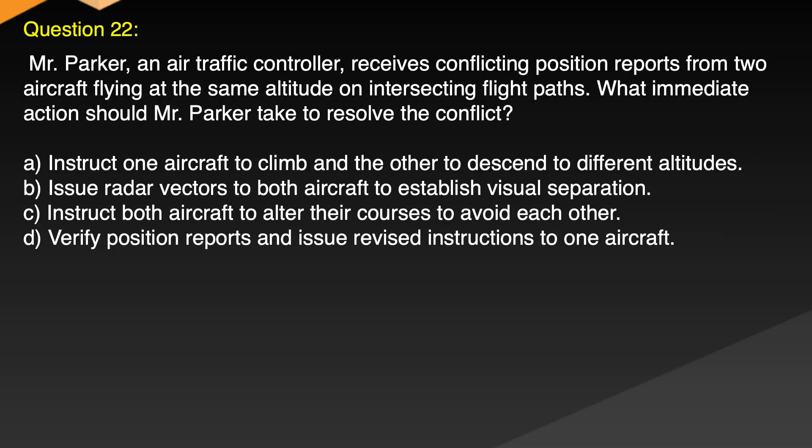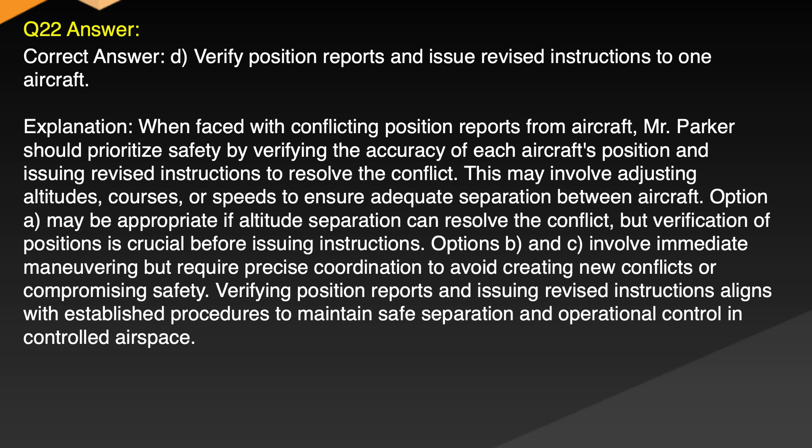Question 22. Mr. Parker, an air traffic controller, receives conflicting position reports from two aircraft flying at the same altitude on intersecting flight paths. What immediate action should Mr. Parker take to resolve the conflict? A. Instruct one aircraft to climb and the other to descend to different altitudes. B. Issue radar vectors to both aircraft to establish visual separation. C. Instruct both aircraft to alter their courses to avoid each other. D. Verify position reports and issue revised instructions to one aircraft. Correct answer: D. Verify position reports and issue revised instructions to one aircraft.